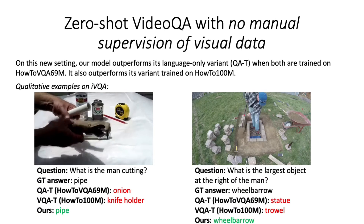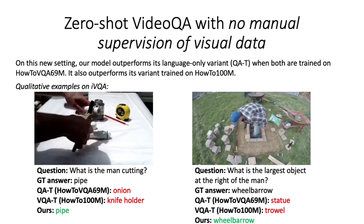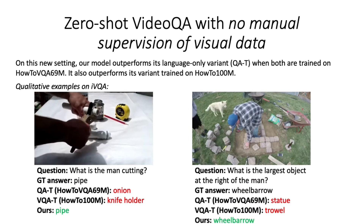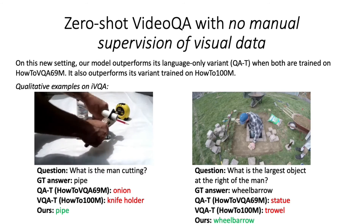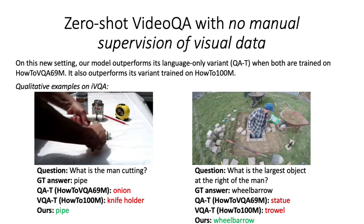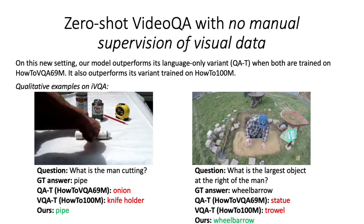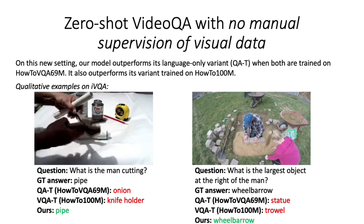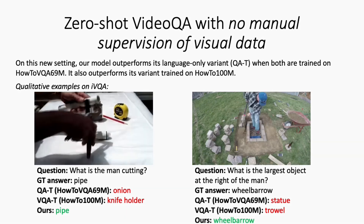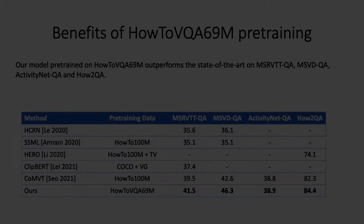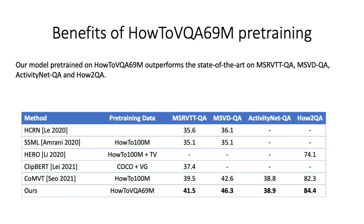We first evaluate our model trained on HowToVQA69M on a new setting, ZeroShotVideoQA, where we prohibit any manual supervision of visual data during training, and we demonstrate the benefits of our approach. Moreover, after fine-tuning, our model improves the state-of-the-art on four different video QA datasets.